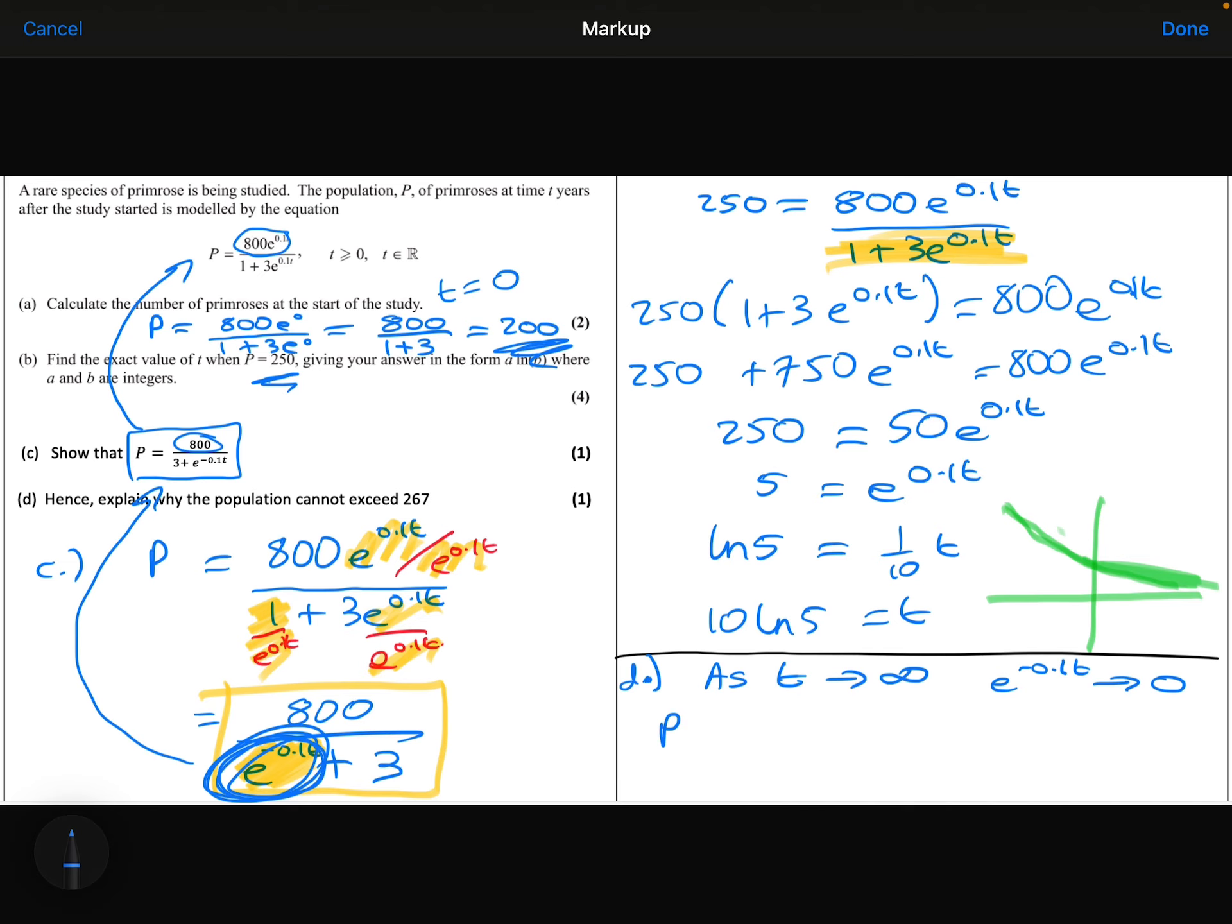Therefore, the population will tend towards 800 over 3, which is 266.6. So the population will get towards 266.6.